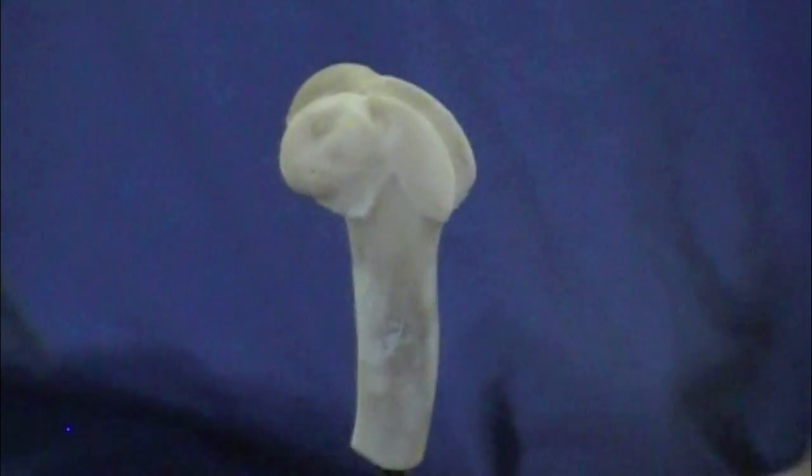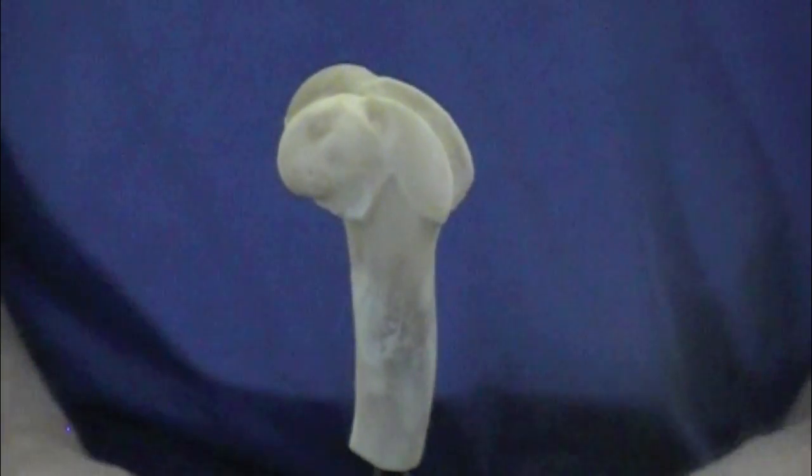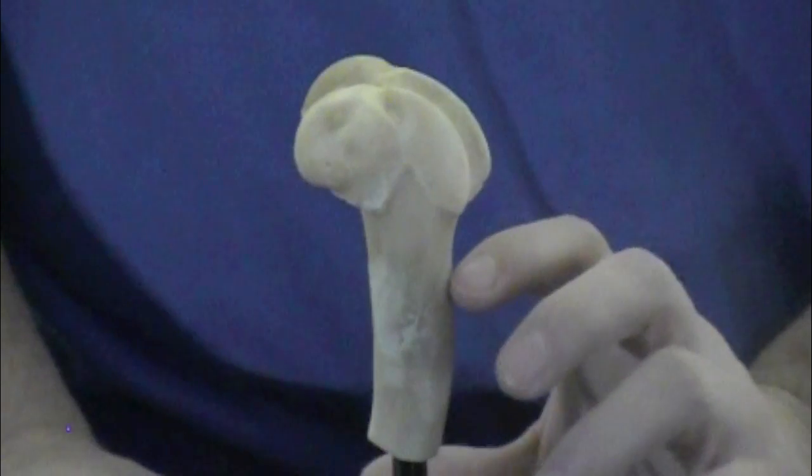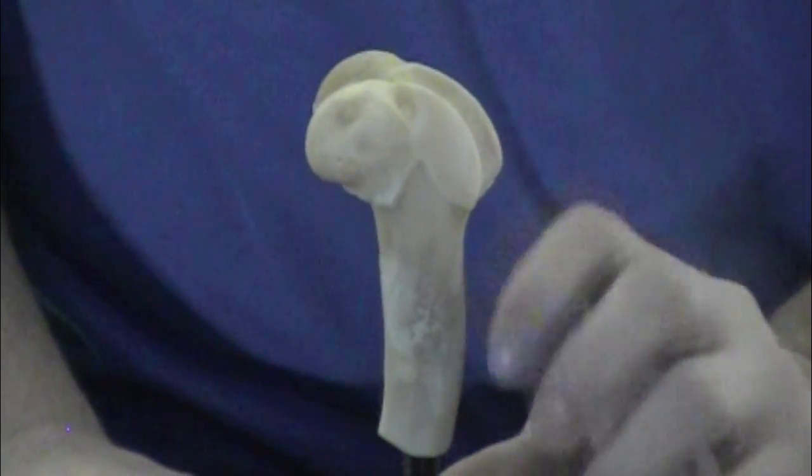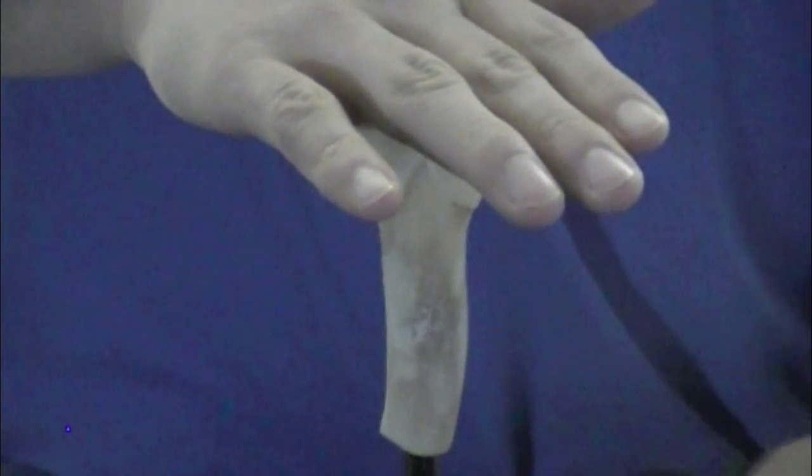Now we're going to go over the parts of the bone. The first one we're going to start off with is the shaft of the bone. That's going to be called your diaphysis. And then the end of the bone is going to be called your epiphysis.